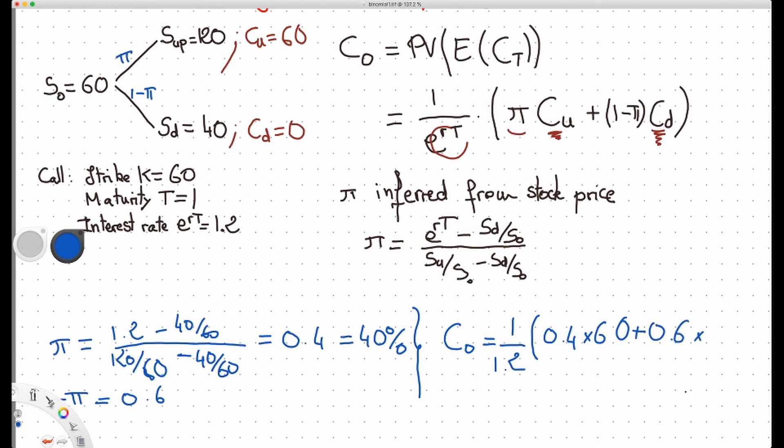Plus 0.6, the probability of going down, times the payoff when we go down. What's the payoff when we go down? Well, it is 0 here, times 0. And that's equal to—well, this thing doesn't matter, so it's equal to 0.4 divided by 1.2 times 60, and that's exactly equal to 20 dollars. You can go back to the last video and check that this is indeed the price we have found.